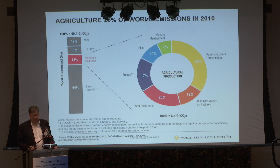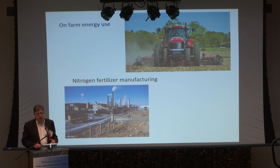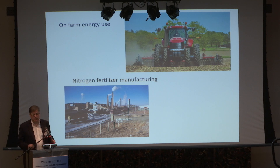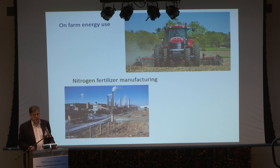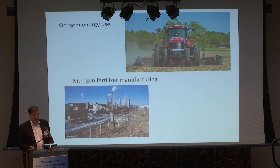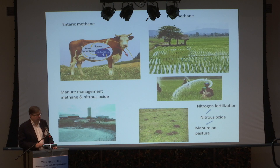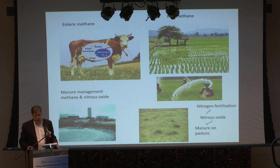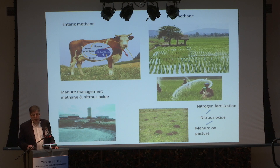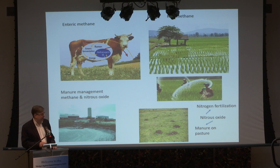A little more than half of agriculture's emissions come from the production process. Some people think those emissions are mainly from energy use, but that's not true. While energy use on-farm and production of inputs like fertilizer play a role, the vast majority of production emissions come from nitrous oxide and methane produced in various parts of the agricultural process.